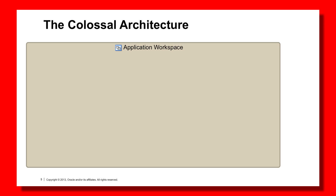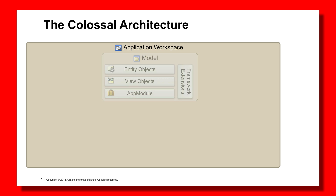Similar to the last episode, let's now look at this particular architectural pattern — the Colossal Pattern — in a diagrammatic format, which will assist you in learning and understanding what this particular pattern looks like. We have just one application workspace made up of a model project with all your entity objects, view objects, application modules, and the framework extension classes.